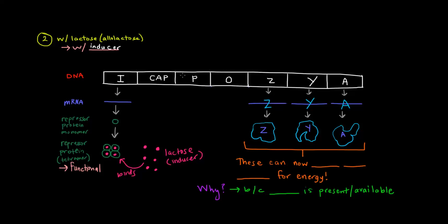So what can happen? RNA polymerase binds at the promoter and goes. It can transcribe — it goes through and transcribes the structural genes. These structural genes become mRNA for the Z, Y, and A genes respectively, and then they're translated into proteins. These proteins can now break down lactose for energy because lactose is present and available. So it makes sense that lactose is the inducer — it causes the transcription of the genes that break it down and use it for energy.